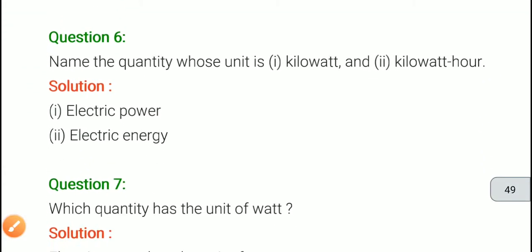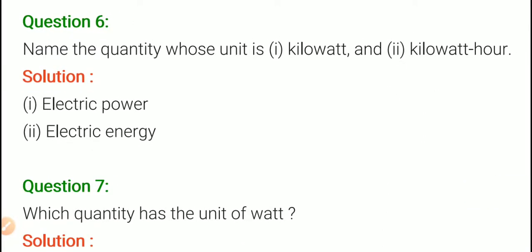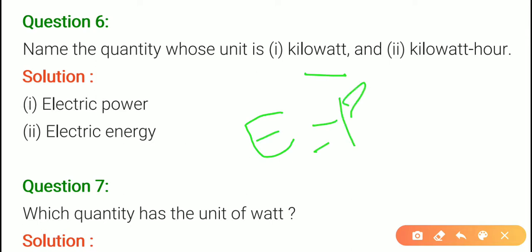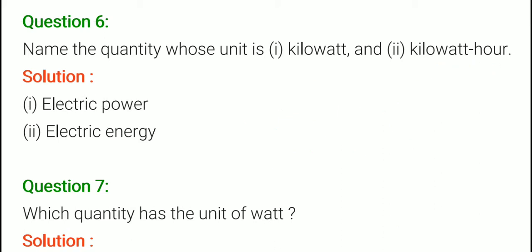Question number 6: name the quantity whose unit is kilowatt, and the second part is kilowatt hour. Kilowatt is the unit of electric power, because power is what, and kilo is just a prefix. Kilowatt hour — since energy equals P into T, both watt and hour appear, so kilowatt hour is the unit of electric energy.